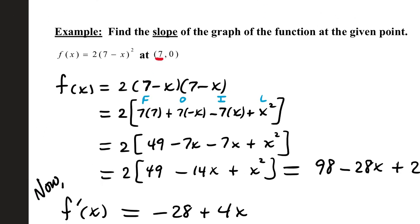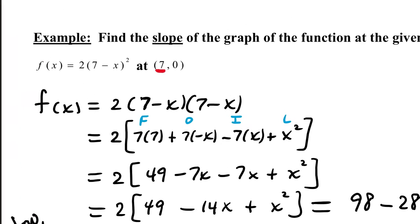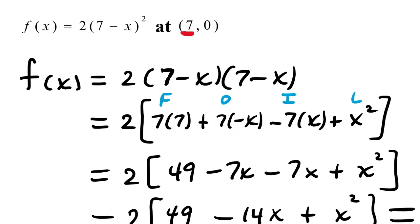A second example. This function is not necessarily prepped in order to use power rule. Remember with power rule, we like our terms to be in the ax to the n format. This function is not. We can take f of x equals 2 times (7 minus x) quantity squared, and apply the exponent before multiplying.